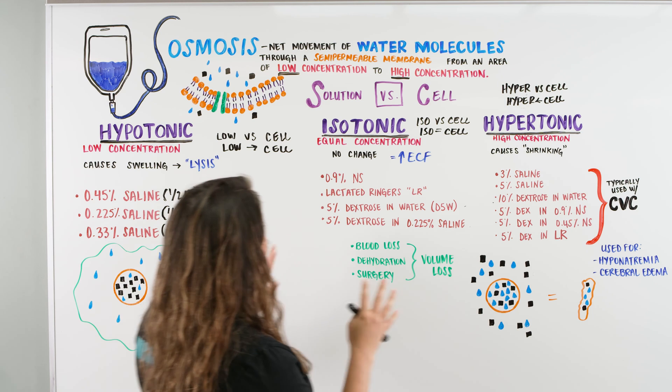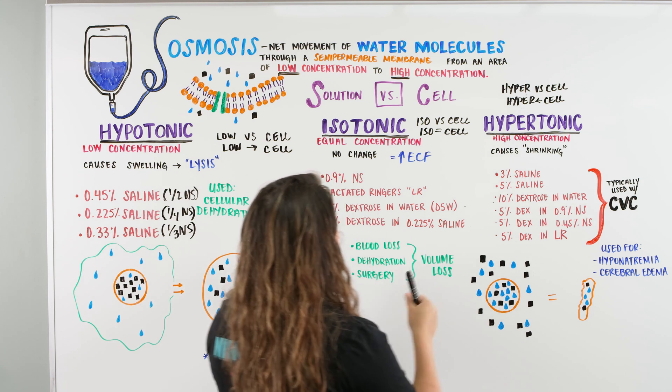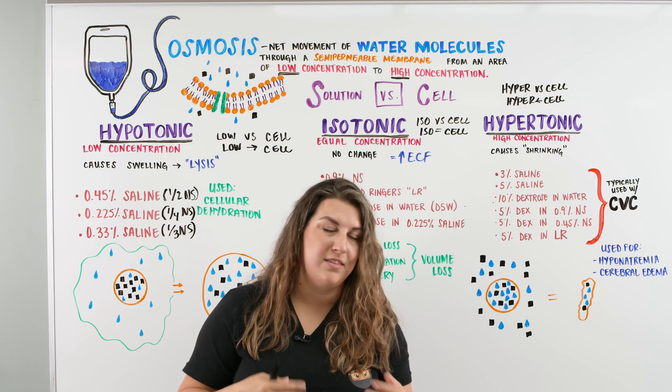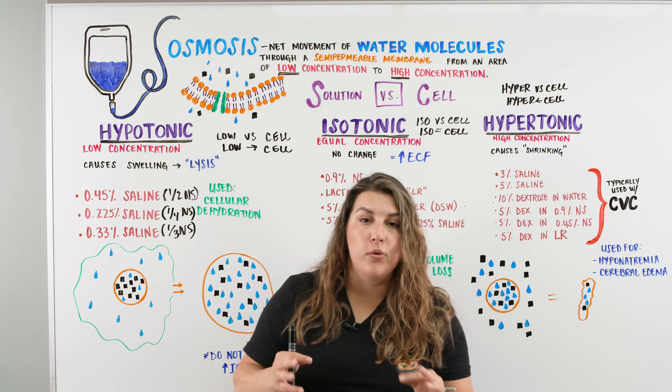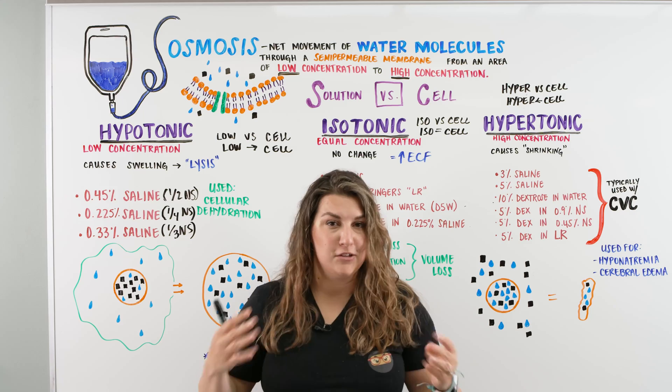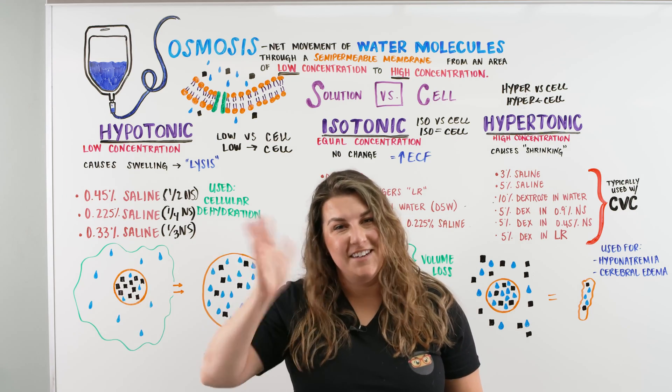All right. So that is our hypo, isotonic, and hypertonic solutions. Remember, Ninja Nerds, I want you to keep into your head solution versus cell because I think that works the best. Don't forget that water is always obsessed with salt. So where there is more salt, water is going to follow. And that's our process of osmosis. I hope this made sense. And as always, until next time.